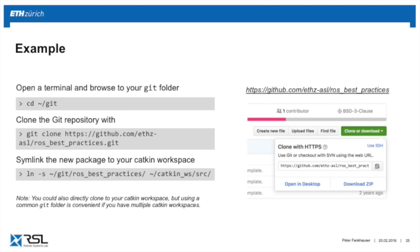You can have multiple Catkin workspaces — you might have one for this class and another for a semester thesis, and you don't want to mix them. Instead of cloning everything directly into the Catkin workspace each time, we recommend creating one central Git folder and then symlinking to the different Catkin workspaces, only including the packages you actually need. You could also clone directly into the workspace — it wouldn't matter technically — but organizing with a central Git folder is better practice.